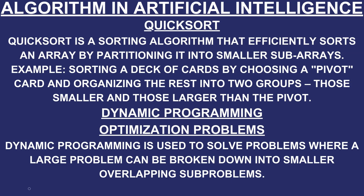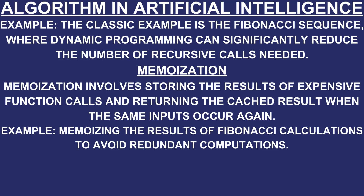Dynamic programming is used to solve problems where a large problem can be broken down into smaller overlapping sub-problems. The classic example is the Fibonacci sequence, where dynamic programming can significantly reduce the number of recursive calls needed. Memoization involves storing the results of expensive function calls and returning the cached result when the same inputs occur again. For example, memorizing the results of Fibonacci calculations to avoid redundant computations.